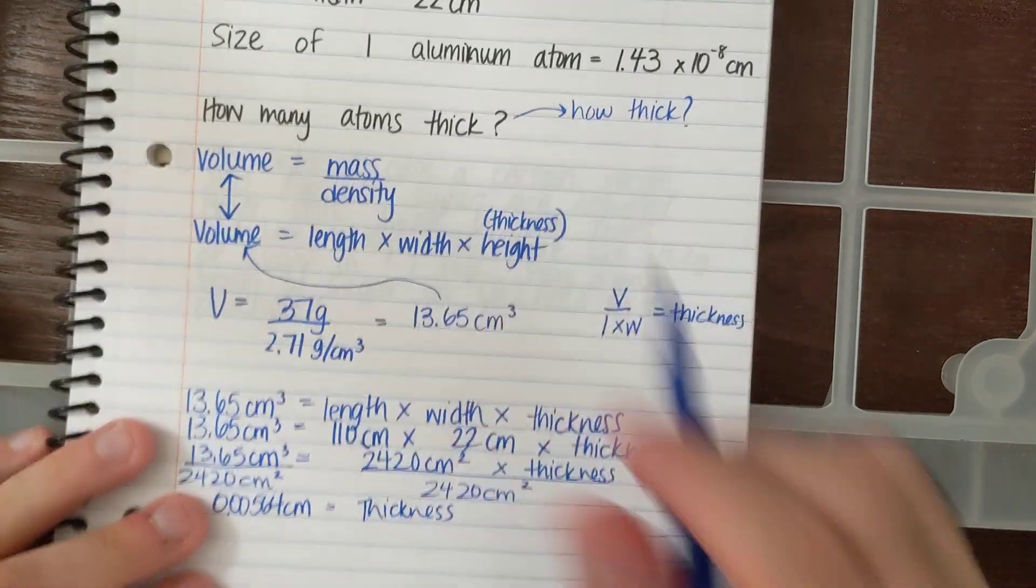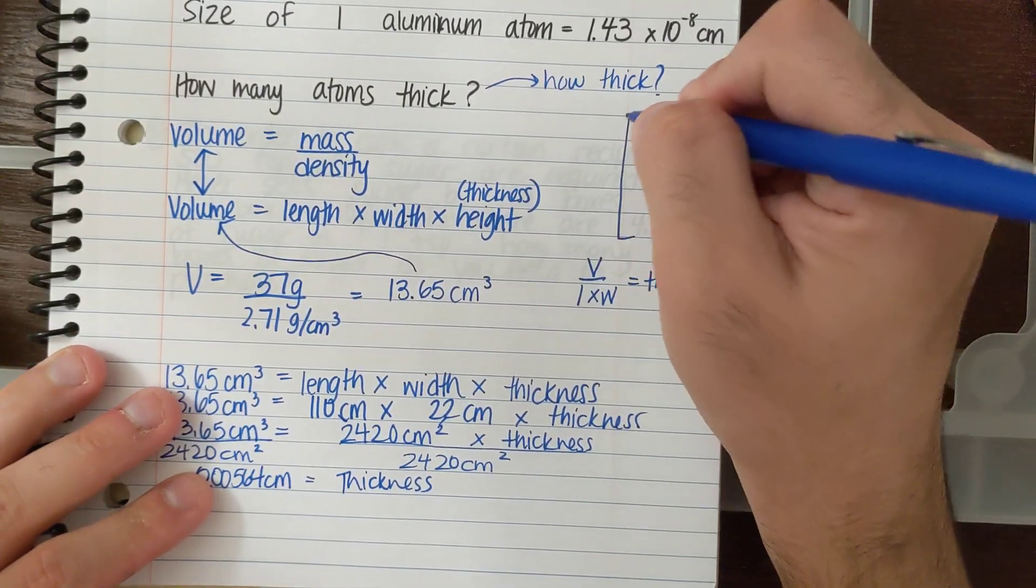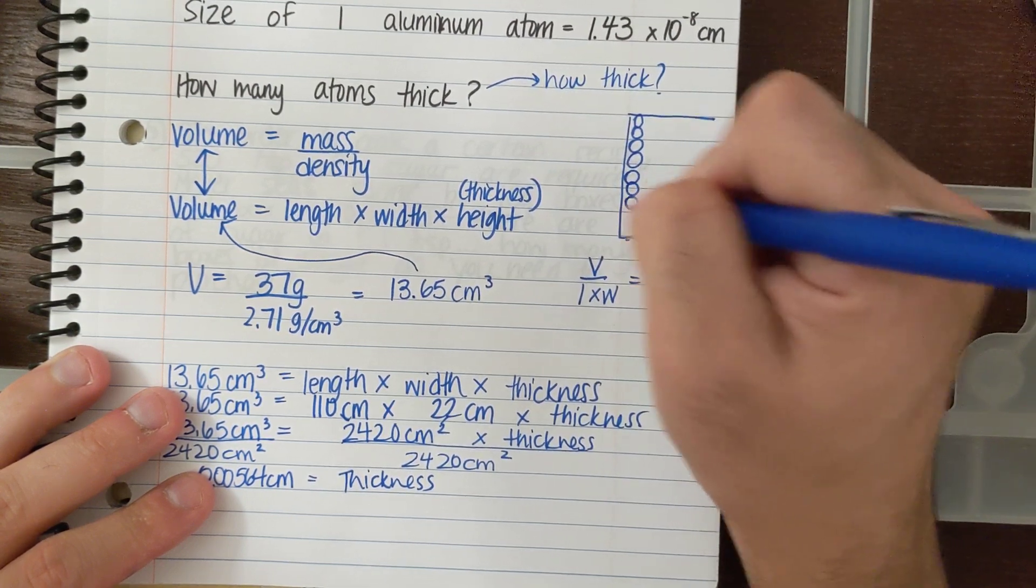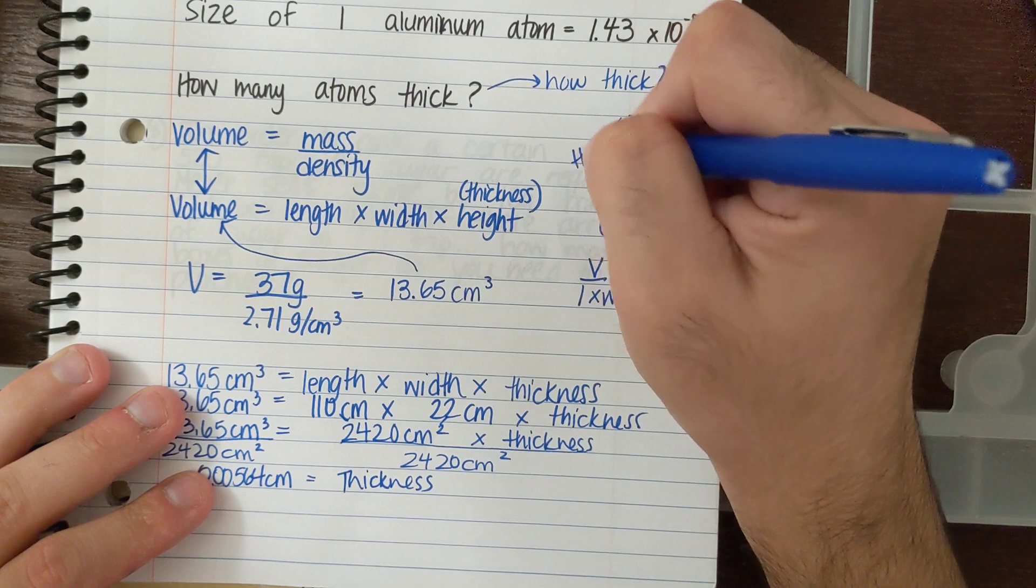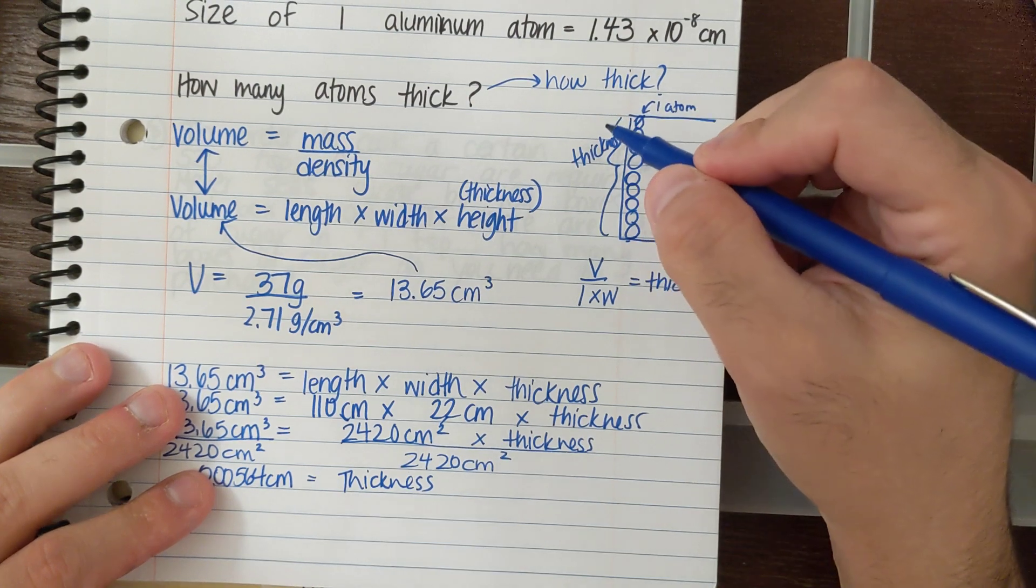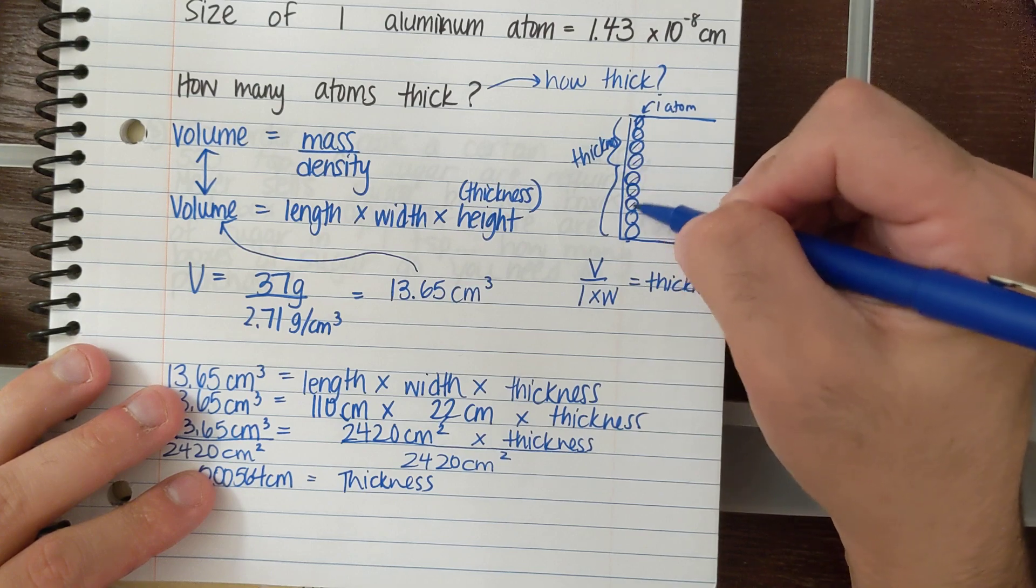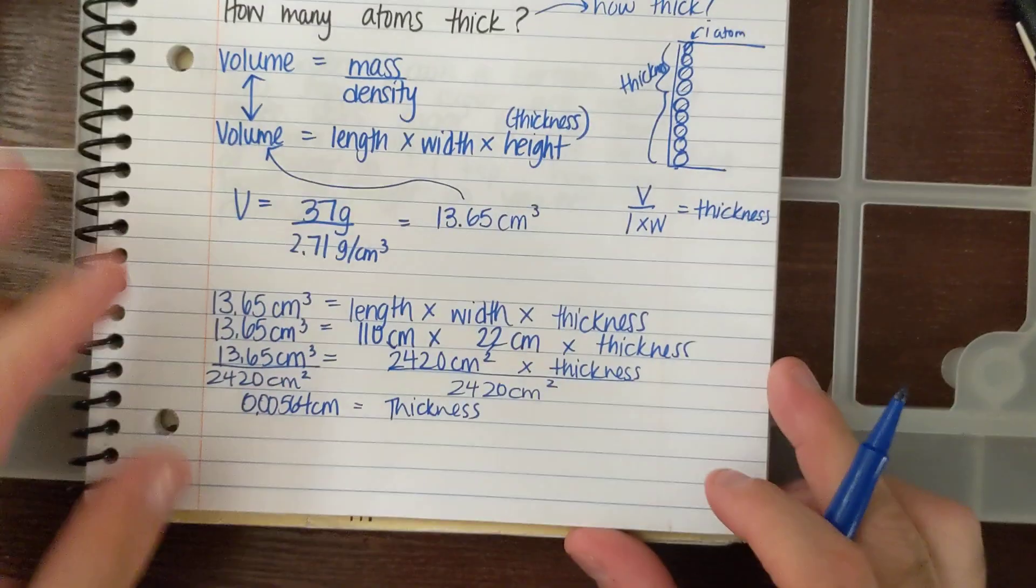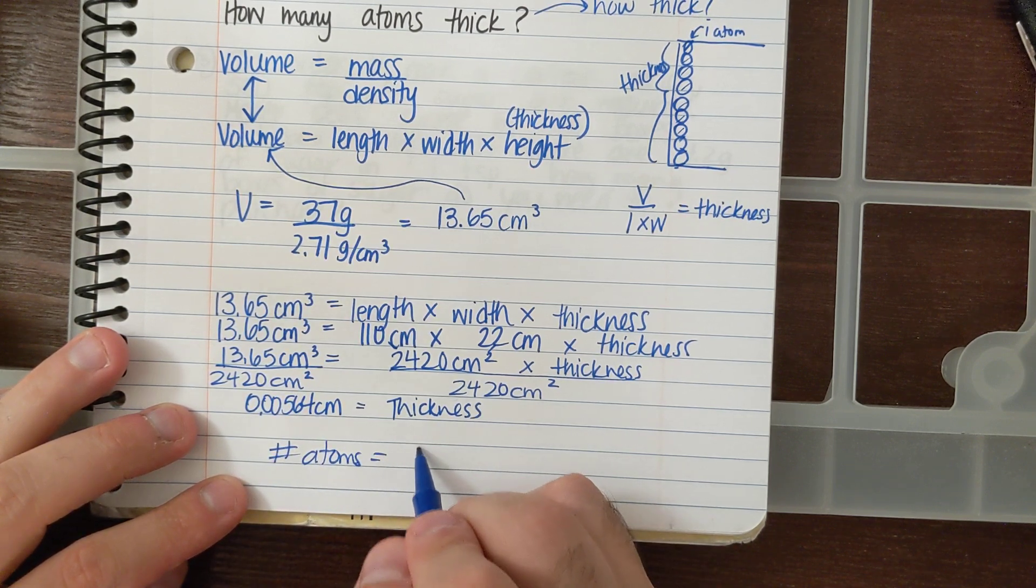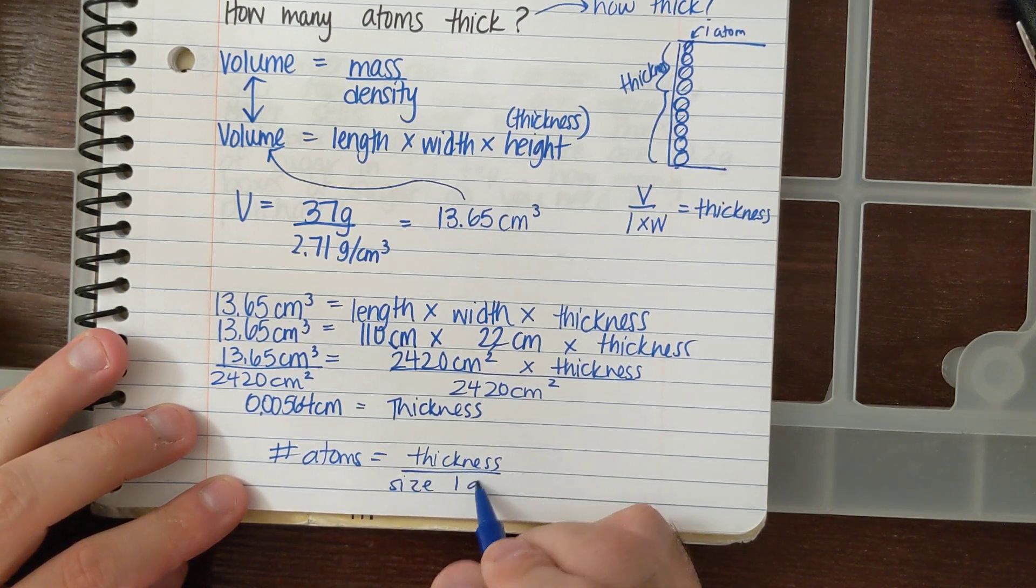Now, if I want to figure out how many atoms thick, that's just how thick the foil is. If I want to sketch like a zoomed in version of the thickness, if I divide the thickness by the size of one atom, I'll figure out how many atoms could fit in that thickness space. So let me write that down. Number of atoms is equal to the thickness over the size of one atom.